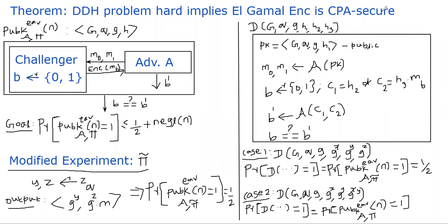I'm going to prove this theorem: if the Decisional Diffie-Hellman problem is hard, then ElGamal encryption is CPA secure. I assume you already watched the video segments on DDH and ElGamal encryption, so I will make use of all the notations we have been using.